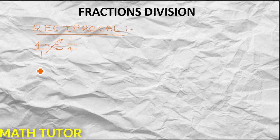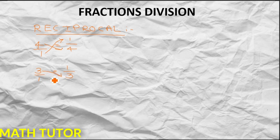Suppose I have a number 3. The reciprocal will be 1 by 3, because we have the number 1 here. So the numerator will become the denominator and the denominator will become the new numerator.